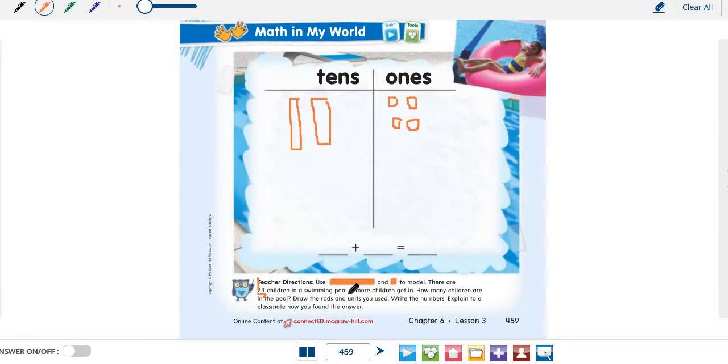And then, 3 more children get in. How many children? Three. What do you need to draw now? Rods or unit cubes? Of course, cubes. Unit cubes. Great, grade one. So we will draw them here. One, two, and three.